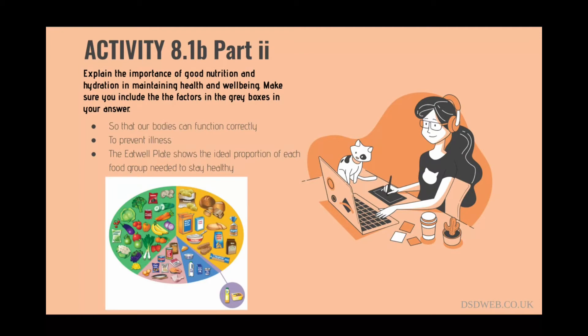The Eat Well Guide divides food into groups: fruit and veg for vitamins and minerals; bread, pasta, rice and other starchy carbohydrates; meat, fish, eggs, beans and other high protein foods; milk, cheese, yoghurt and other dairy products; and oils and spreads. Fluids are needed for several of the body's systems to function correctly, including digestion, excretion, blood circulation and perspiration.